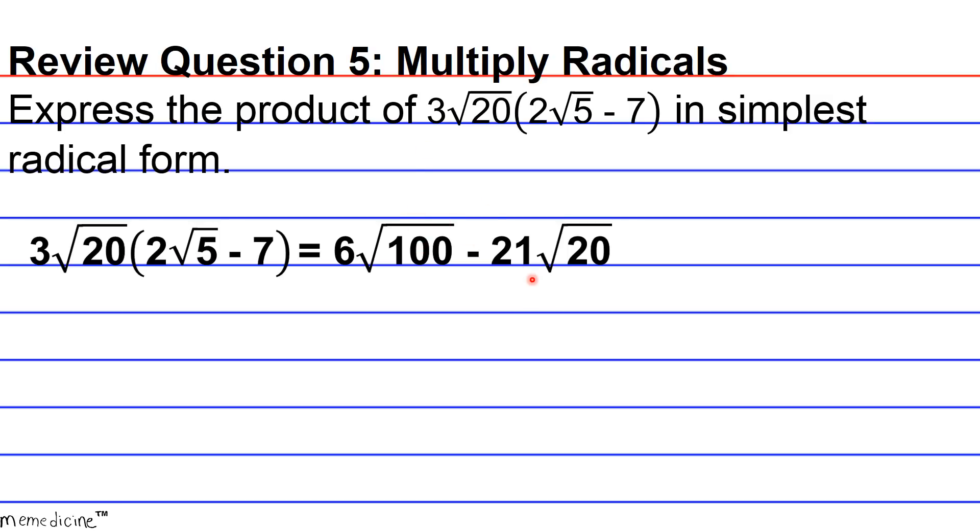We also want to break down √20 into perfect squares and non-perfect square portions. We can extract 4 times 5, with 4 being a perfect square. Let me show you what I mean by that.